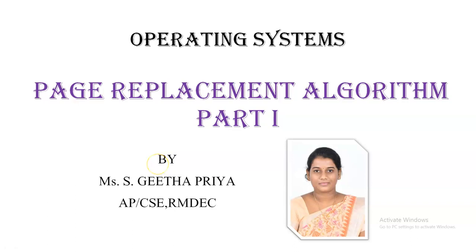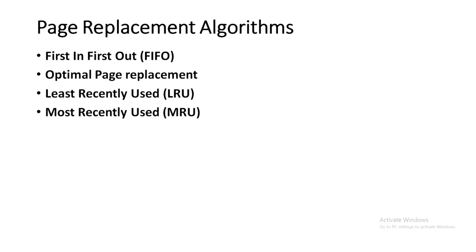Hello everyone, this is Geeta Priya from R&B Engineering College. In this lecture we will be seeing about page replacement algorithms. There are four types: First In First Out, Optimal Page Replacement, Least Recently Used, and Most Recently Used. In this lecture, we will be covering the first two types.